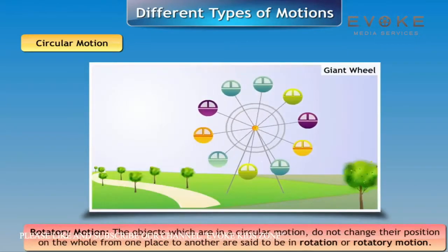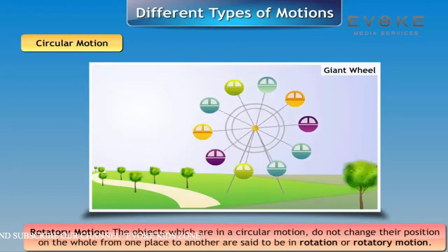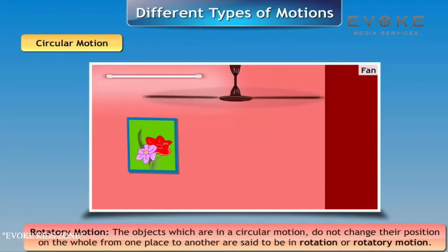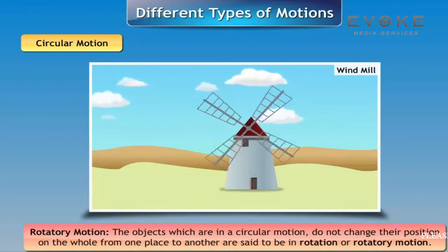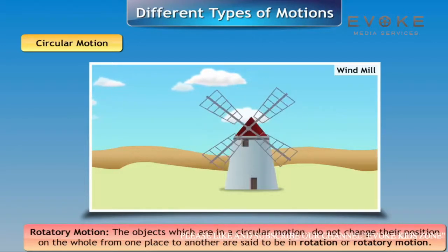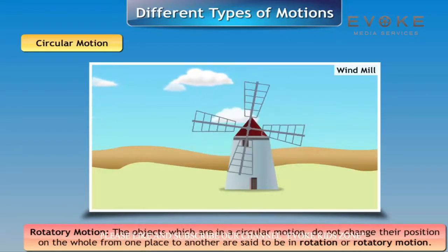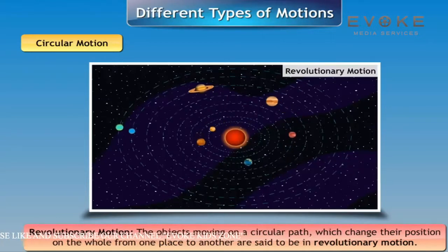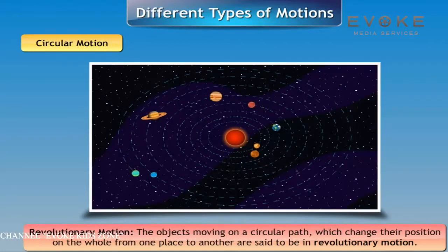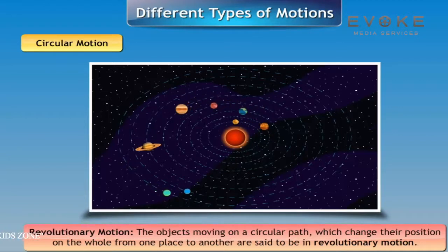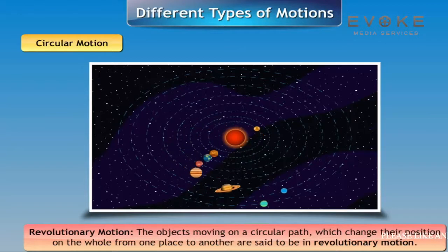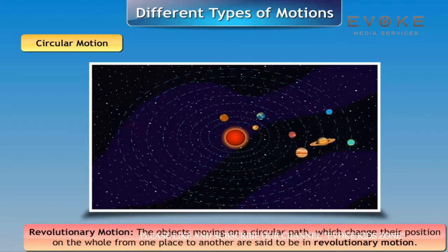Rotatory motion - when objects which are in circular motion do not change their position on the whole from one place to another. Revolutionary motion - the objects moving around the sun are in revolutionary motion.